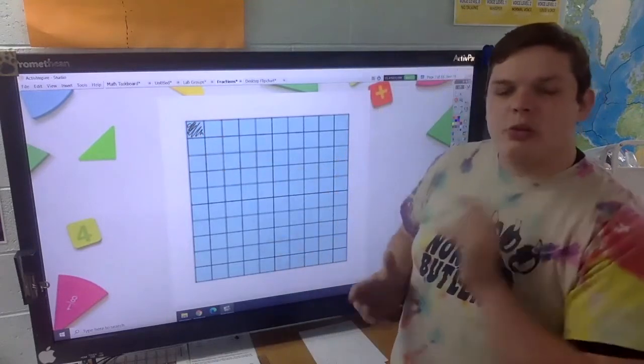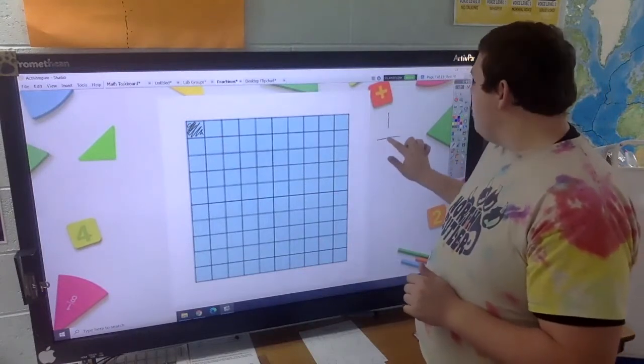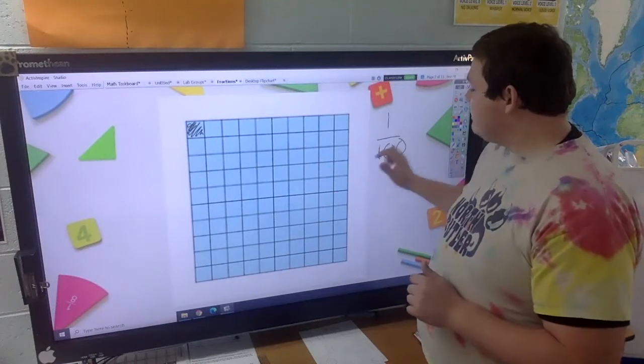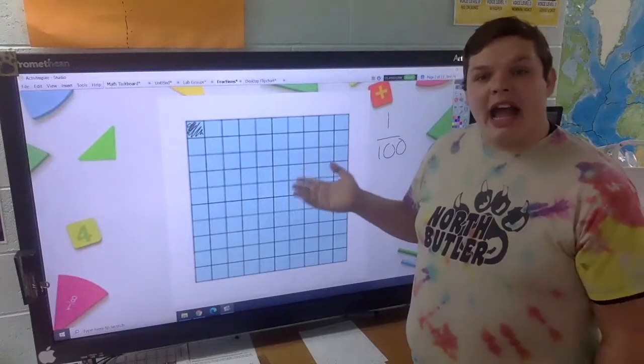I just shaded one little square. That means I would have one piece out of 100 because they're all equal sides. I cut this into 100. That is the fraction one out of 100.